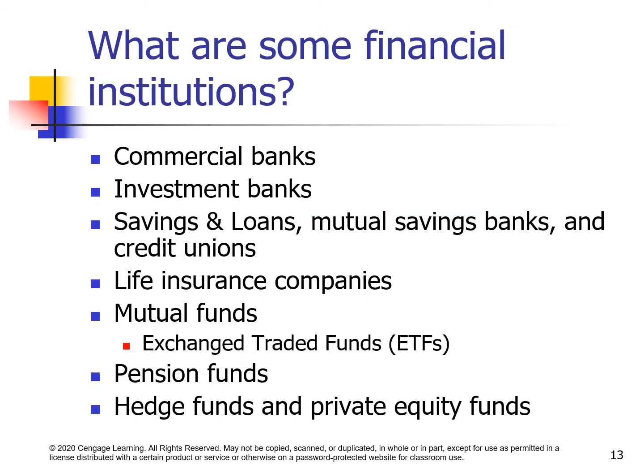What are some financial institutions? Financial institutions include commercial banks, investment banks, savings and loans, mutual savings banks, and credit unions, as well as life insurance companies, mutual funds, ETFs, pension funds, hedge funds, and private equity funds.